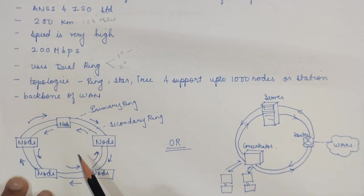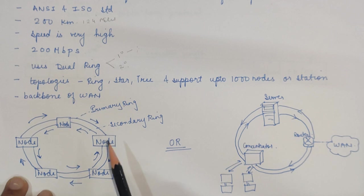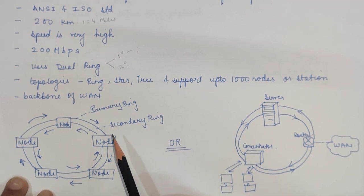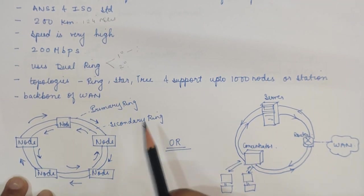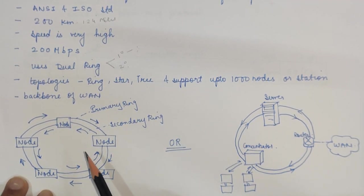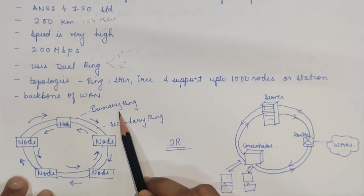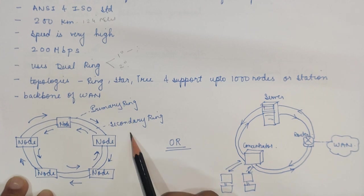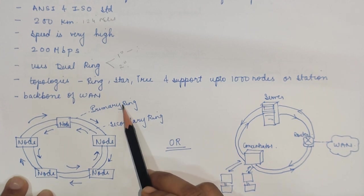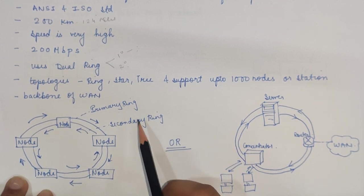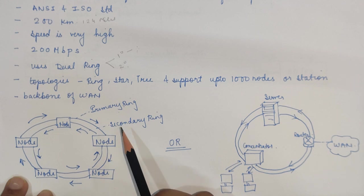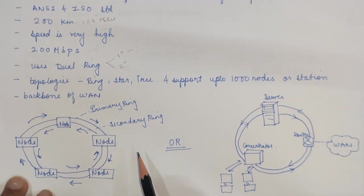The primary ring carries data between systems, while the secondary ring is used for redundancy. If any system on the network causes an interruption in the primary data path, the secondary ring is used until the primary ring is recovered. It works similar to a token ring.